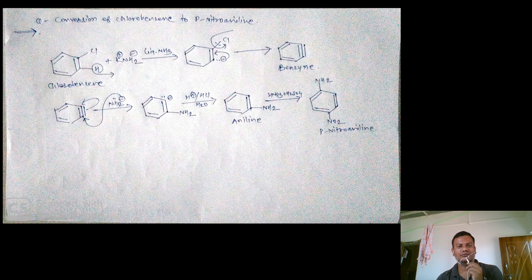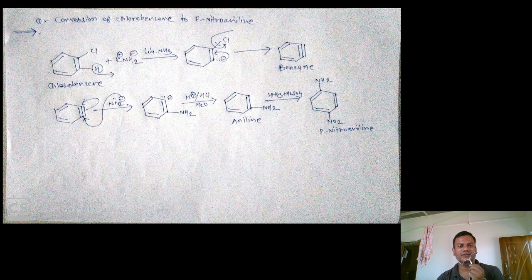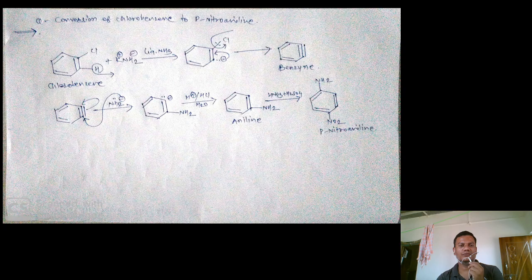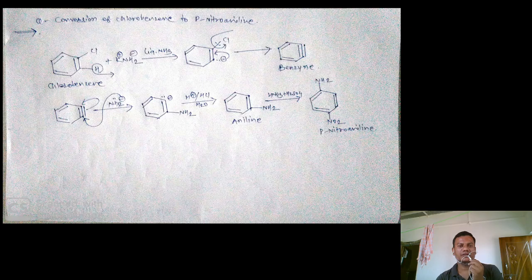NH2- abstracts the proton. This hydrogen is removed as a proton by NH2- and converted into NH3, ammonia. When H+ is removed from this point, there is formation of a negative charge at this carbon of the benzene ring.